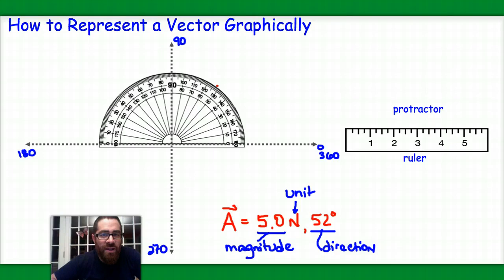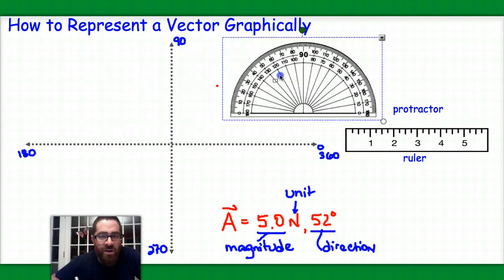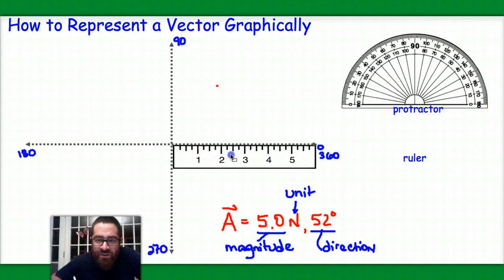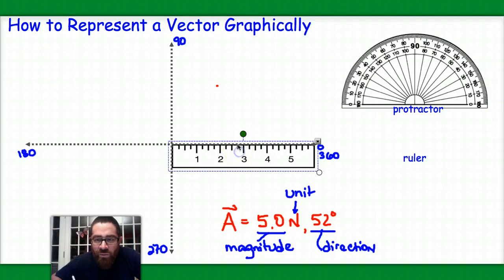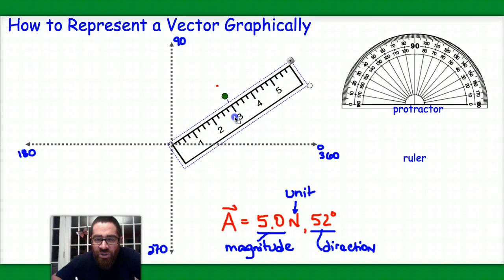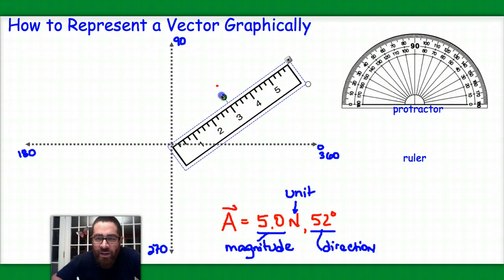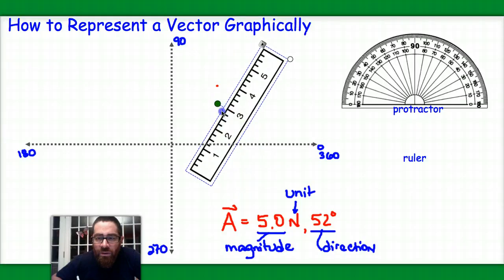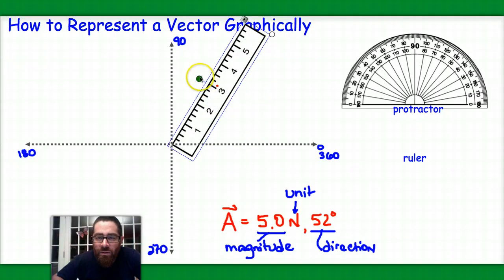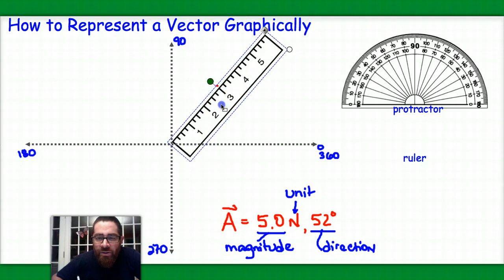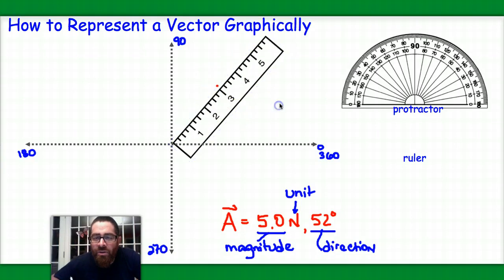Didn't want to move the axis there. All right, so there we go. And then what I'm going to do is I'm going to bring in my ruler, and what I'm going to do is move this ruler so that it goes from the origin to that mark that I made. And I'm getting there somewhere right around here. That looks pretty good.